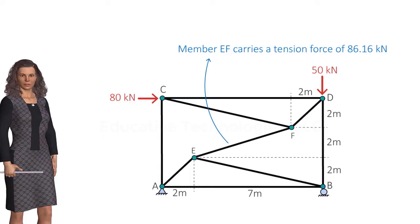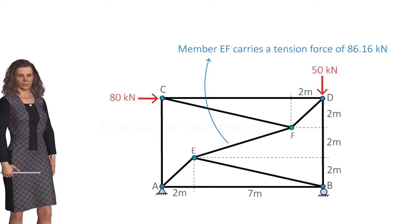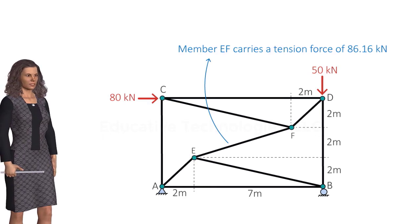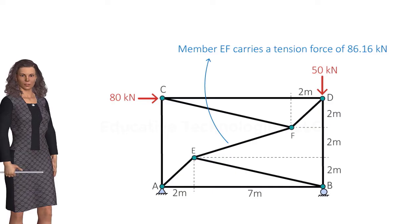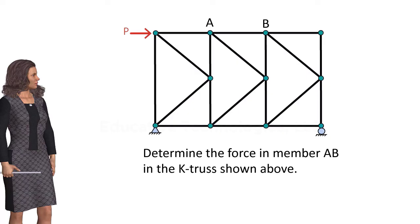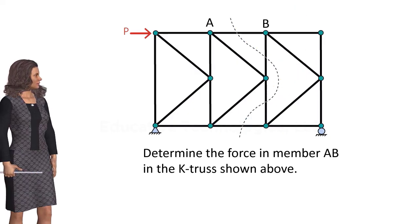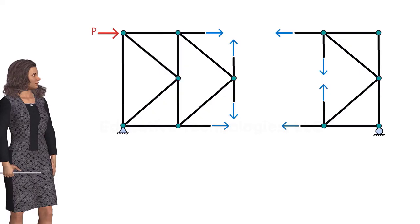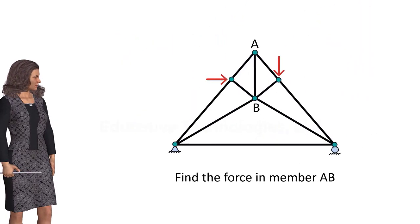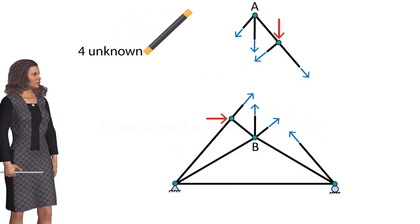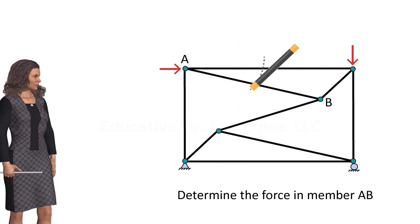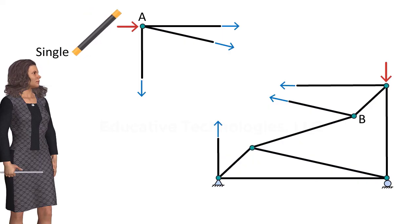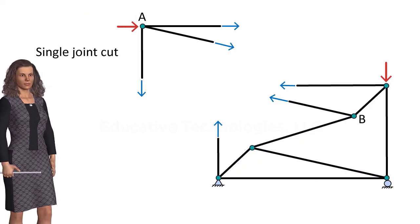In summary, using the method of sections, we can calculate the force in a member without needing to analyze the entire truss. For most statically determinate trusses, we can easily apply the method of sections to calculate member forces. However, there are a few special cases to be aware of: Case 1 — how to cut a k-truss for calculating a member force; Case 2 — what if the number of unknowns is more than the number of equations; Case 3 — when using the method of sections, can we cut away a single joint? These cases are discussed in the supplementary material for this lecture.